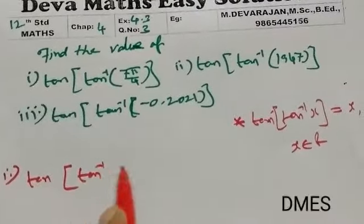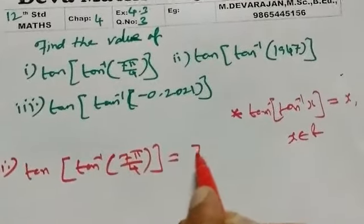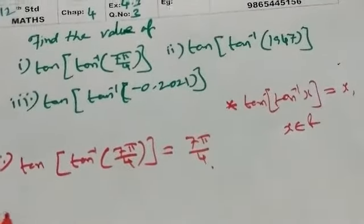Applying this property: tan inverse of tan inverse of x equals x. The answer is pi by 4.